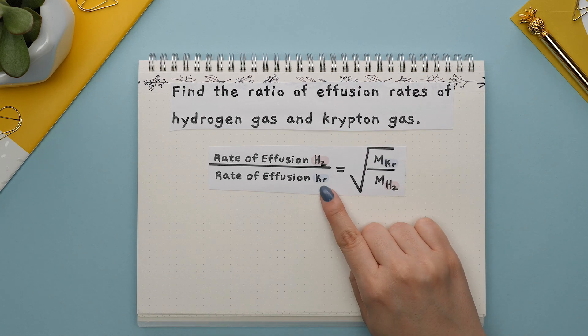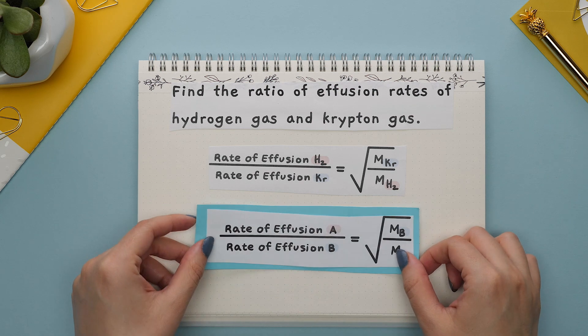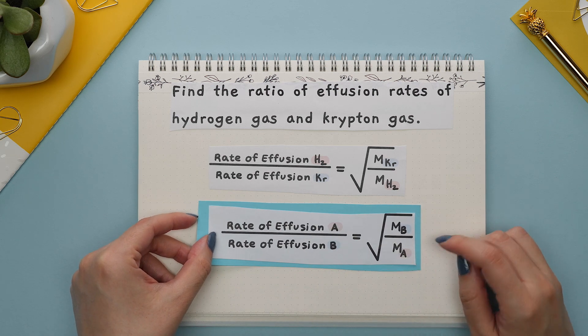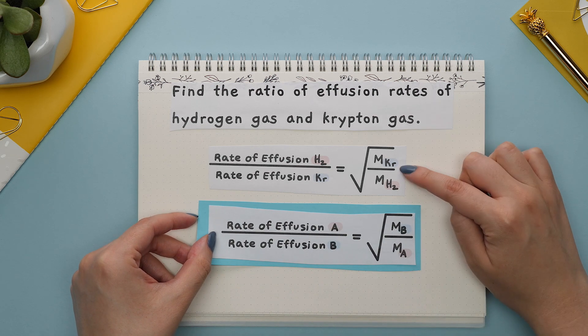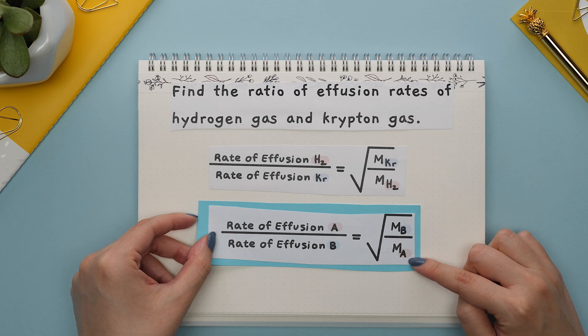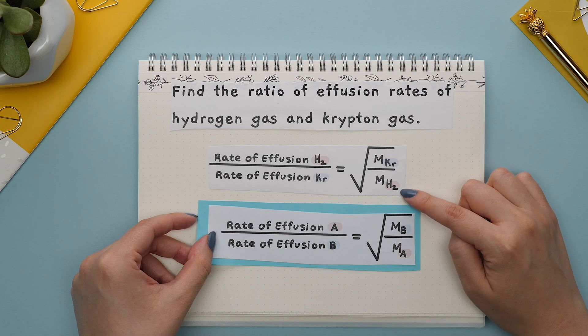On the bottom we would have the rate of effusion for krypton. According to our formula the molar mass of the second gas will be on top so krypton and the molar mass of the first gas will be on bottom so hydrogen gas.